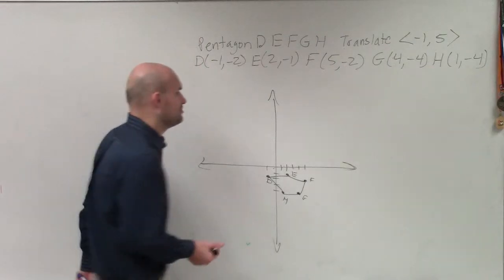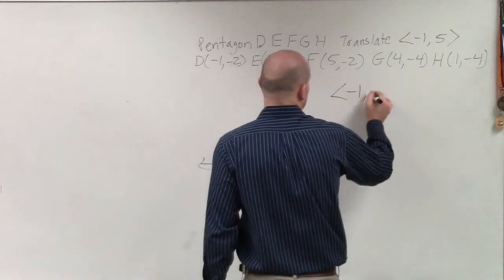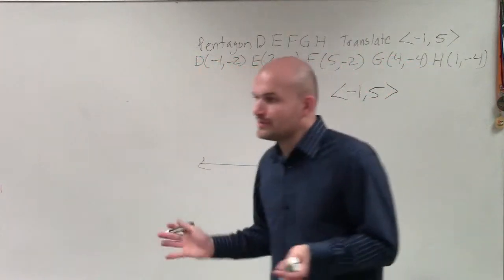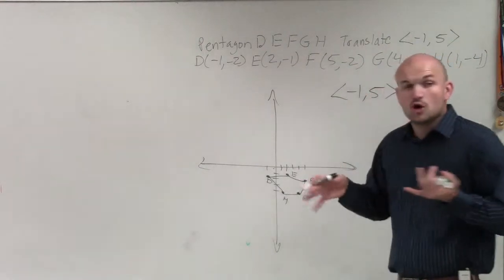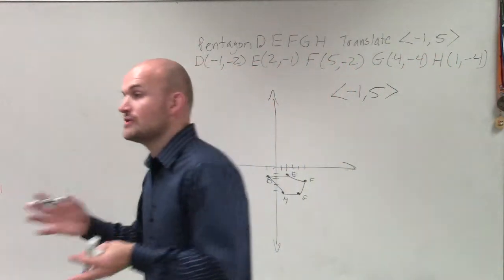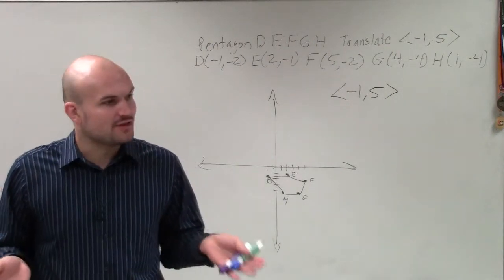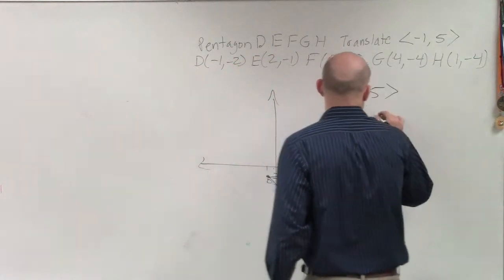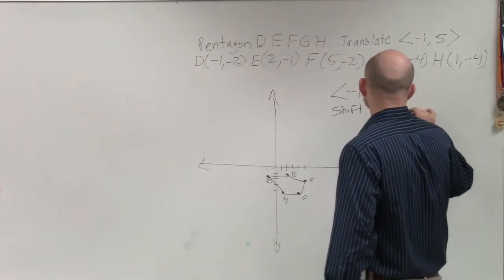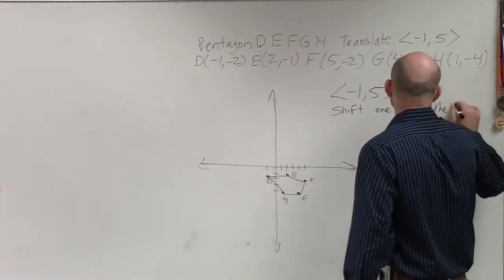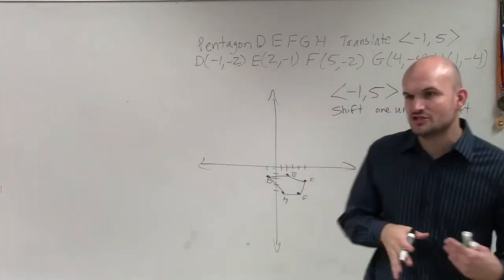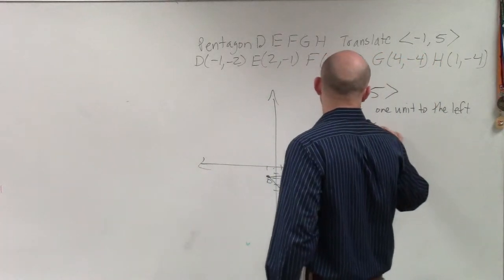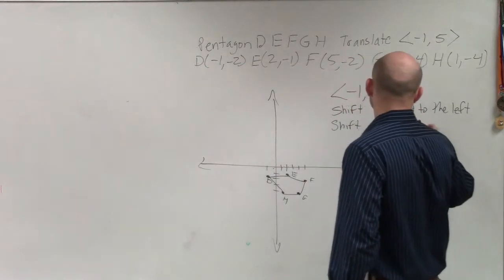Now the next thing we need to do is we need to apply the transformation by the vector negative 1 comma 5. So what that is telling us is when we're using this transformation vector, that's telling us we need to move, shift, slide, translate this figure by the vector of negative 1, 5. Negative 1, 5 tells us to shift our figure one unit to the left, and then the 5 tells us to shift 5 units up.